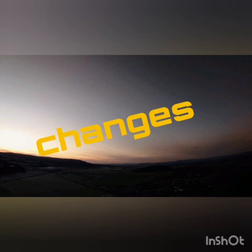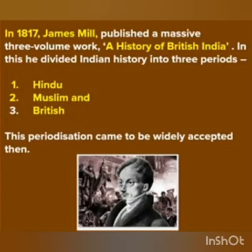In 1817, James Mill, who was a Scottish economist and political philosopher, published a massive three-volume work, 'A History of British India.' In this book, he divided Indian history into three periods: Hindu, Muslim, and British.